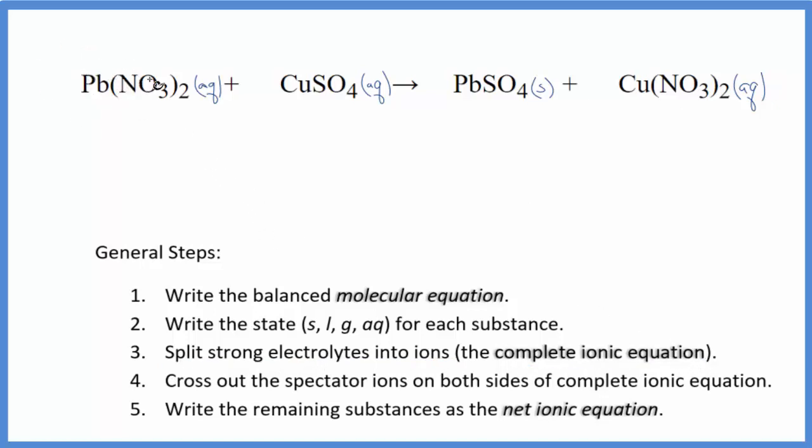We don't know the charge on lead, but the whole nitrate ion is always 1 minus. Good one to remember. Since we have two of them, we need to have a 2 plus here. So this will be the lead 2 ion, and I won't write the states now, let's write that later. Plus we have two of these nitrate ions.